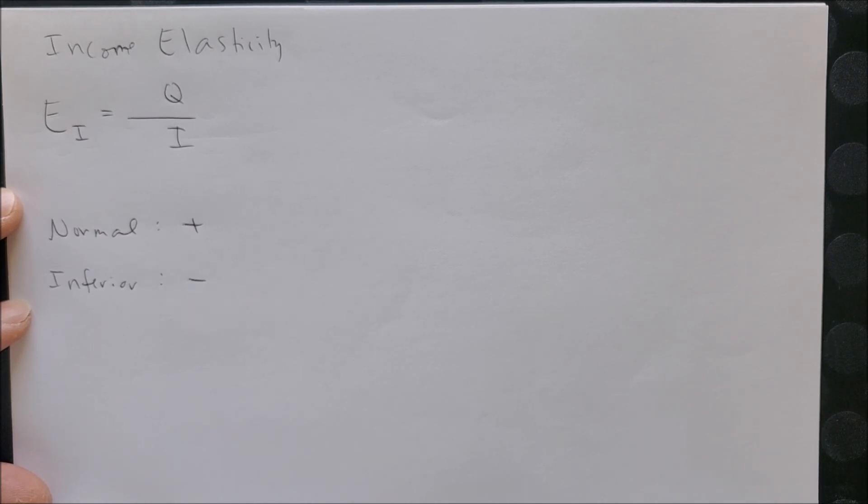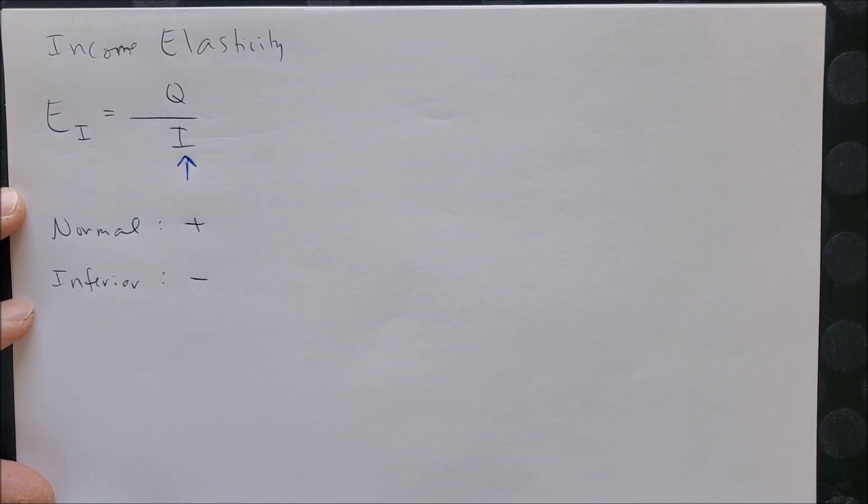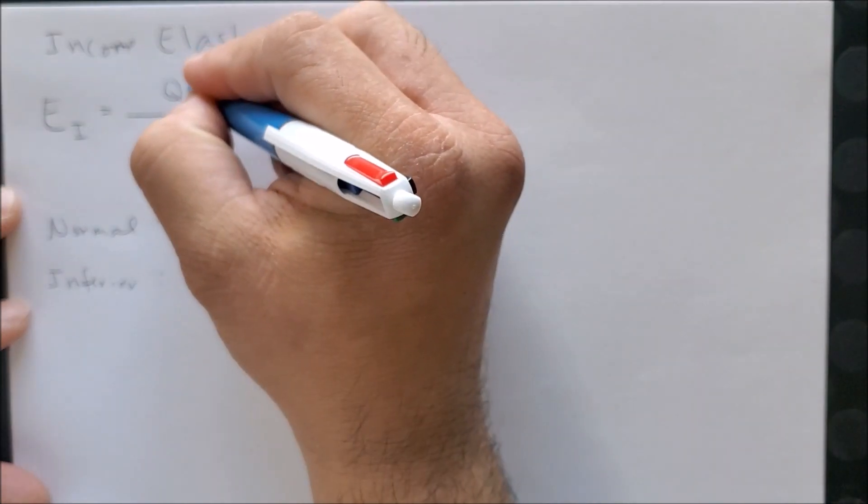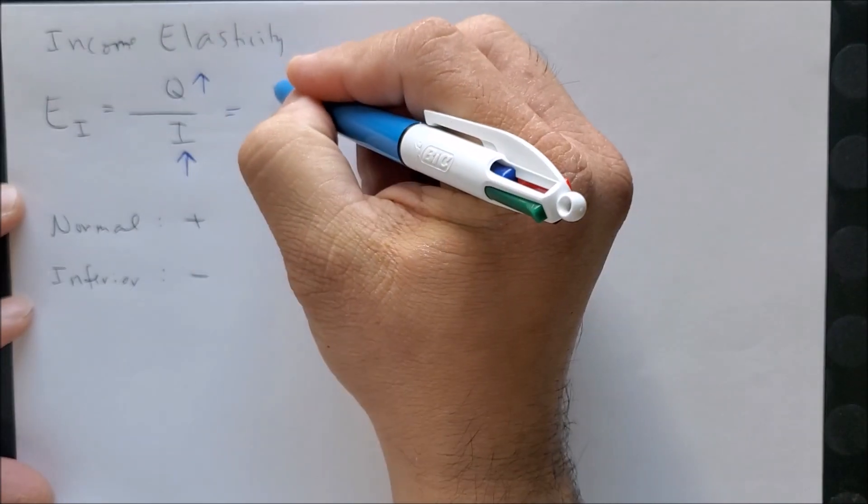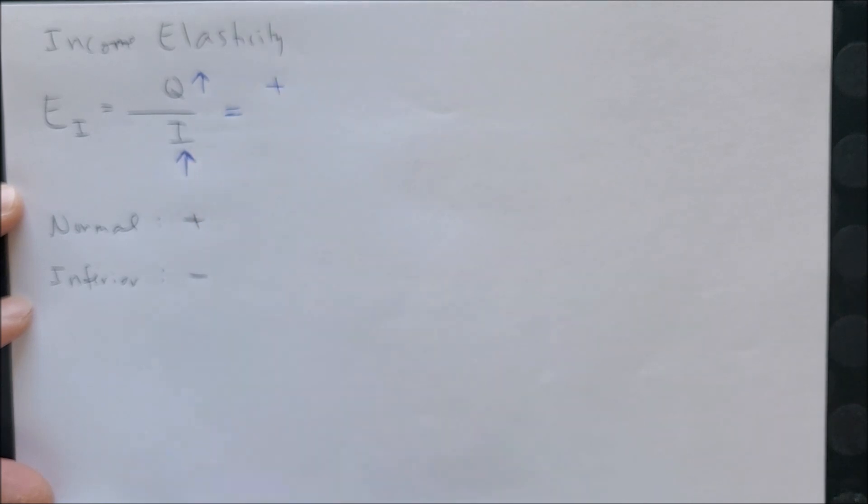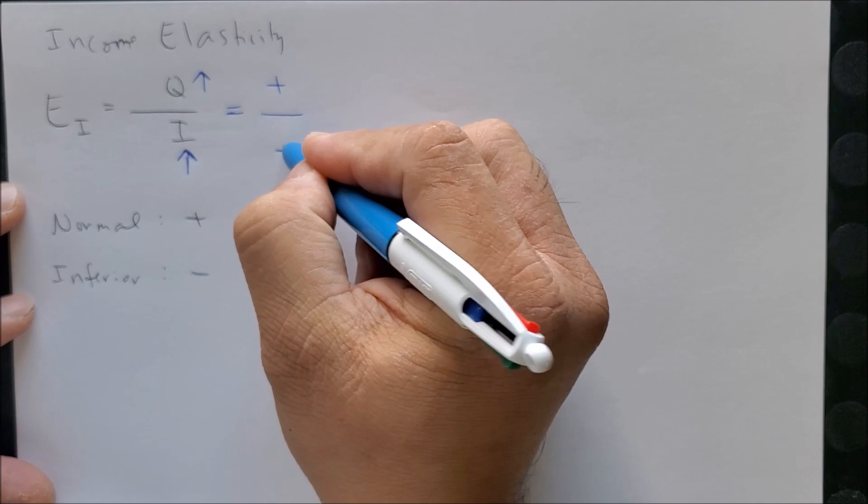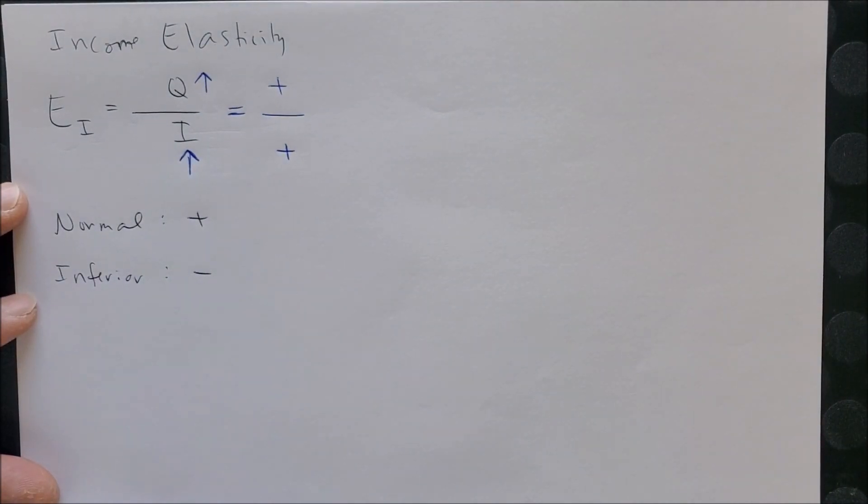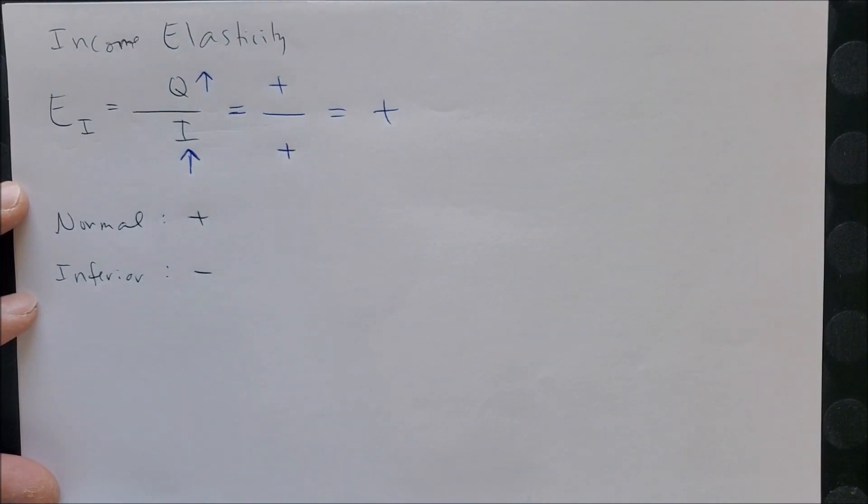Let's say that your income increases, and at the same time the quantity that you consume also increases. So we know that on the numerator we're going to have a positive value—it is increasing—and on the denominator we're going to have a positive value, also increasing. So when you have a positive over a positive, you will get a positive value, and this represents a normal good.